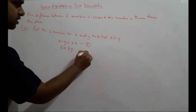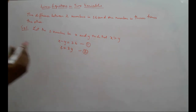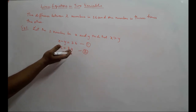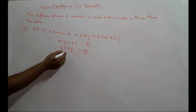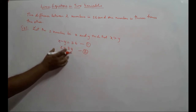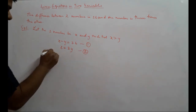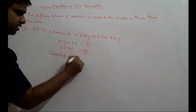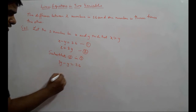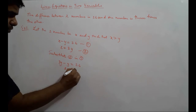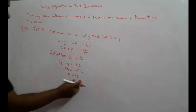Now that we have two equations, we can substitute. This will be a substitution problem. You could also use elimination method by bringing 3y to the other side to get x minus 3y equals zero. But since we already have x equal to 3y, we will substitute equation 2 into equation 1. Instead of x, we write 3y minus y equals 26. Three y minus y equals two y, which equals 26, giving us y equal to 13.